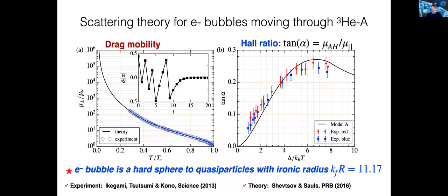This is a comparison of the theoretical results by Schutsoff and myself and the experimental measurements by the RECAN group. The left panel shows the drag mobility over approximately two and a half decades in mobility from temperatures of one millikelvin down to about 250 microkelvin. Remarkable agreement.